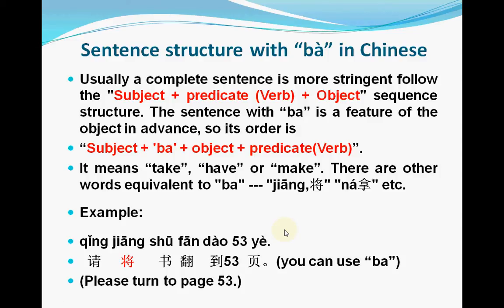Usually a complete sentence follows the sequence: subject, followed by a verb as predicate, followed by object. But the sentence with 把 features the object moved in advance. So the sentence order is: subject, 把, object, then the predicate. So it is subject, 把, object, and then a verb.